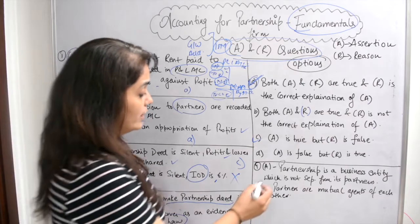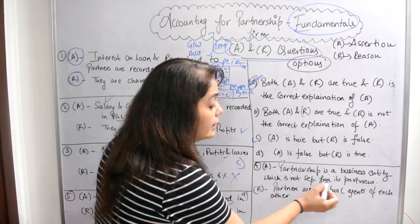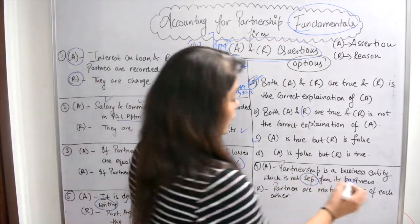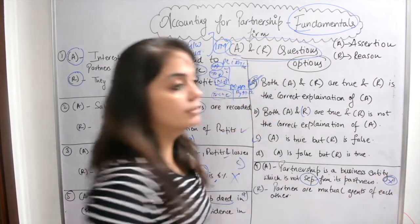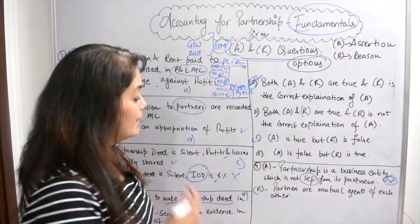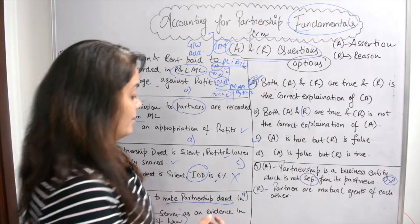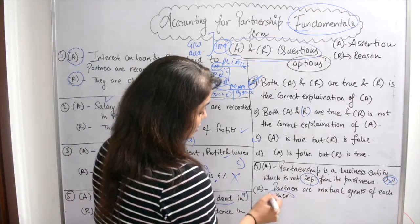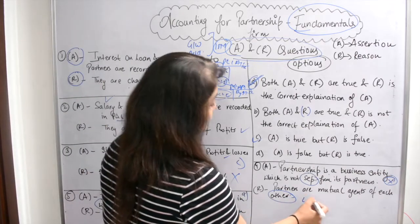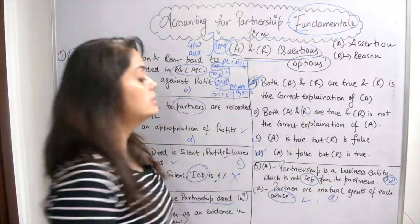Last question: Assertion — partnership is a business entity which is not separated from its partners. This is doubtful — as per the business entity concept, any business entity is separate from its owners. So the assertion is wrong. Reason — partners are mutual agents of each other. That is correct; they help each other and act as mutual agents. So the answer is Option D: assertion is false but R is true.